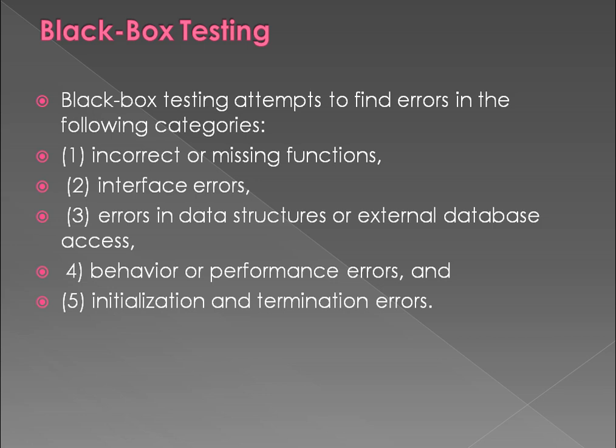Black box testing needs to find errors in specific categories: incorrect or missing functions, interface errors, errors in data structures and behavior, performance, initialization, and termination errors. For example, consider a user interface error — if there is a field called 'age' that should accept only numbers, but you enter characters and click submit, it should automatically throw an error that age must be numeric.